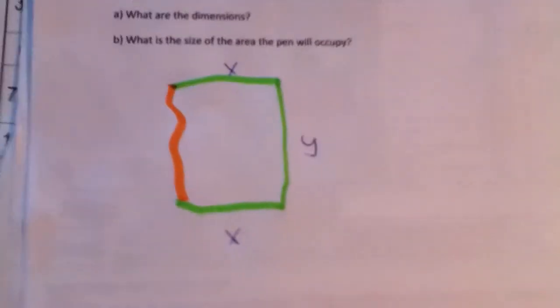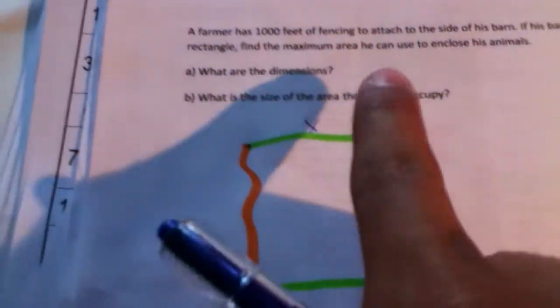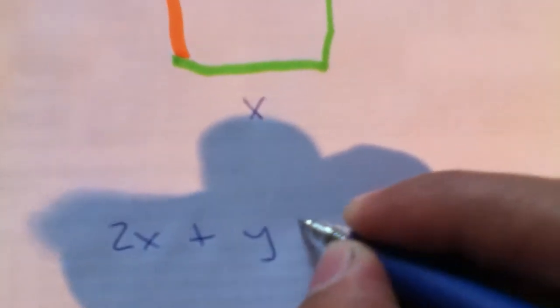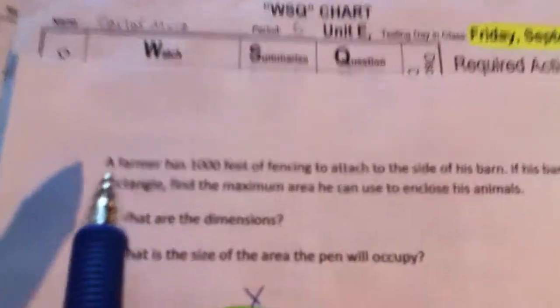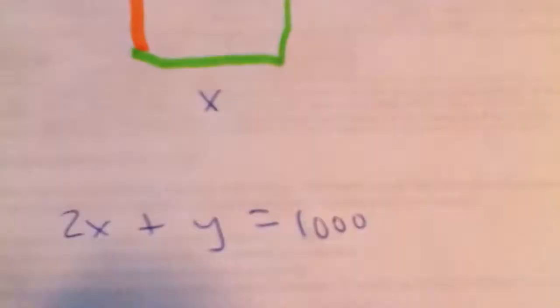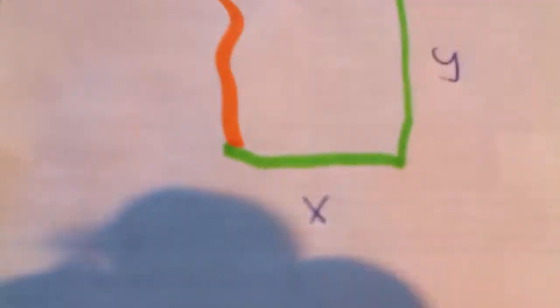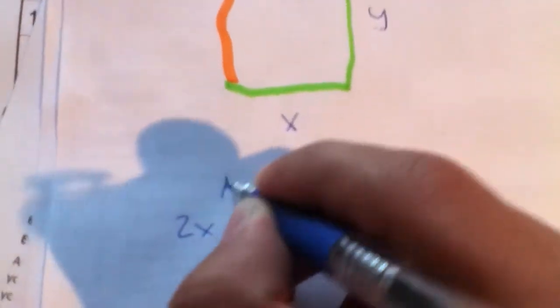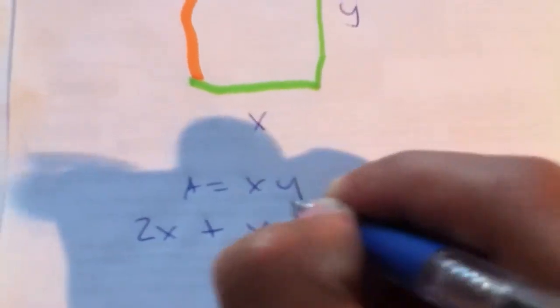Now, if this is x, then the side parallel to it must also be x. Now, here we already have our perimeter, which is these three sides. So, 2x plus y equals a thousand feet. And don't forget that our area equals x times y.